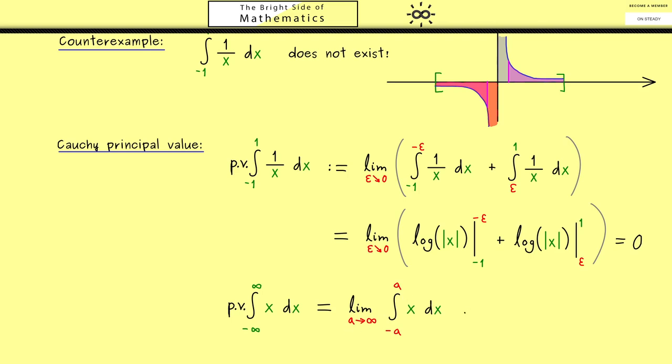And of course in this case we immediately see that the result has to be zero. Now obviously this whole construction here can also be applied to more complicated functions. And maybe it can help in cases where the normal improper Riemann integral does not exist.